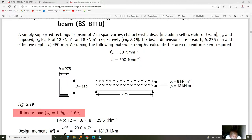You say 1.4 times GK, which in our case was 12, plus 1.6 times QK which was 8. You multiply and come up with this load of 29.6.